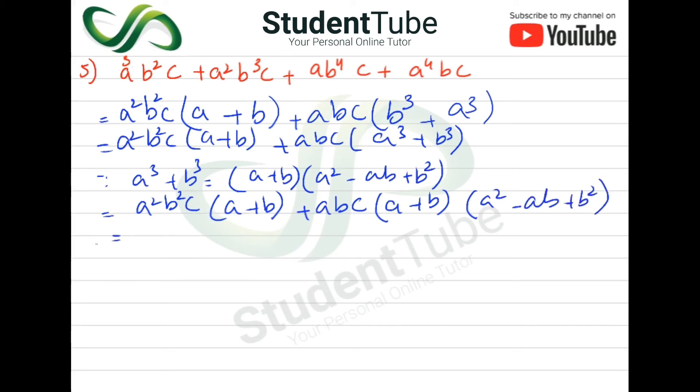abc(a+b), then here we will multiply, then (ab + a² - ab + b²), because here abc we have taken common, and then (a+b) we have taken common.